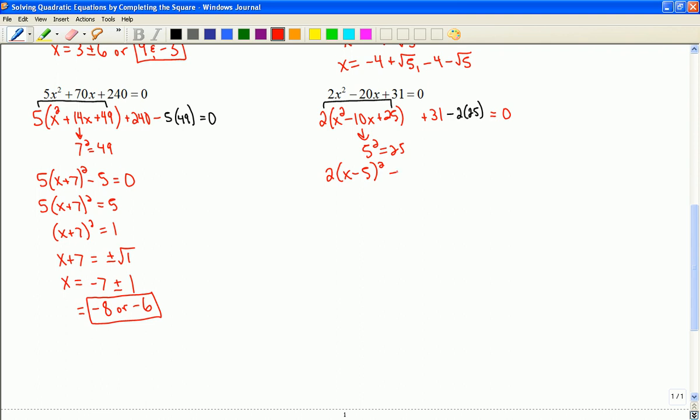So I can make this now 2 times x minus 5 squared. And we end up with this expression, which now we're ready to solve. So this would be 2 times x minus 5 squared is 19. x minus 5 squared is 19 over 2.